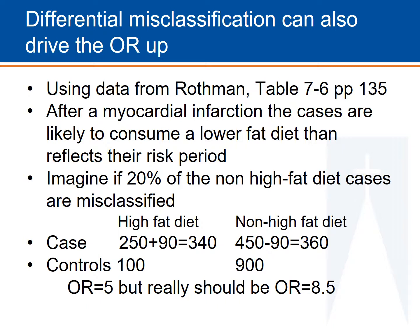Differential misclassification can also go the other way. This slide shows an example where only the cases are misclassified. Taking the original odds ratio, imagine if 20% of the non-high fat diet group among cases were misclassified as being high fat. If that were the case, it would inflate the odds ratio. So the odds ratio from those results would appear to be 8.5, even if the true odds ratio were actually 5.